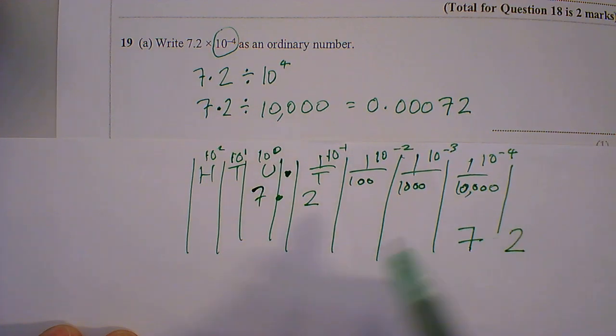And our 2 goes next to it. And all the blank spaces become 0. So you've got 0.00072.